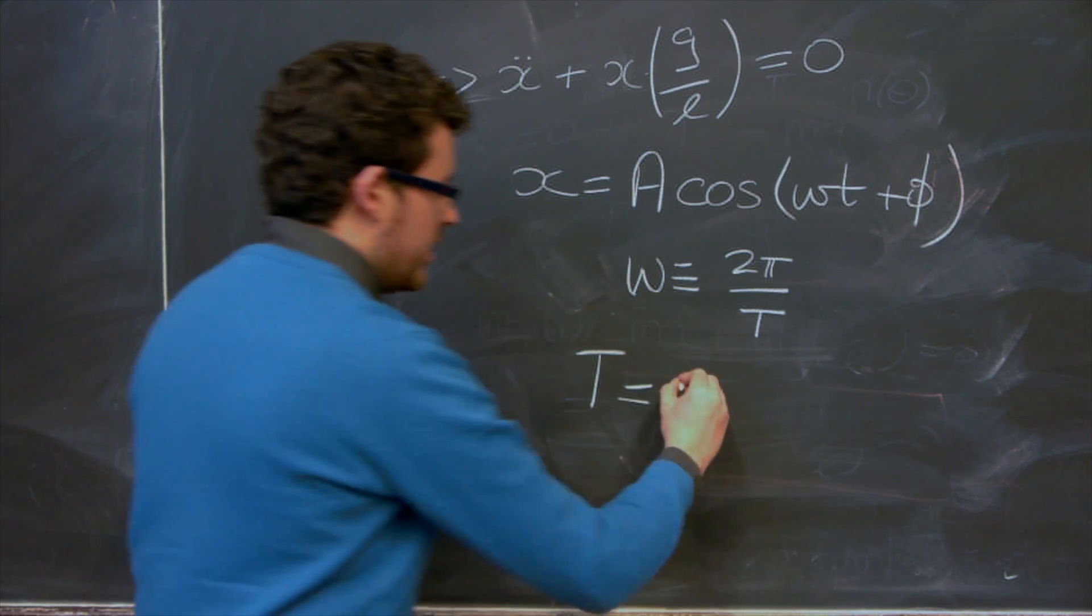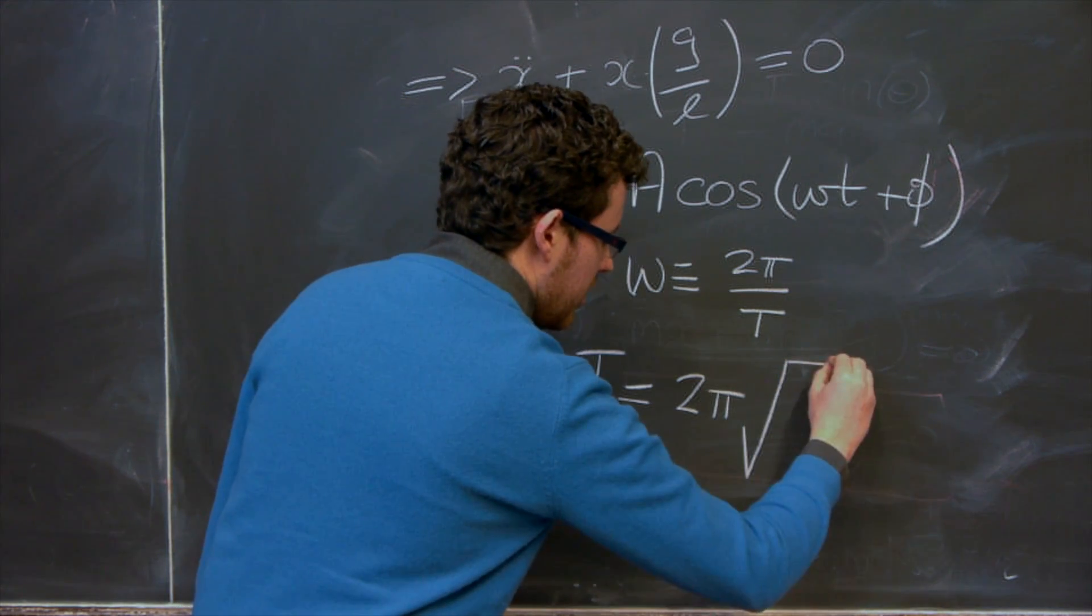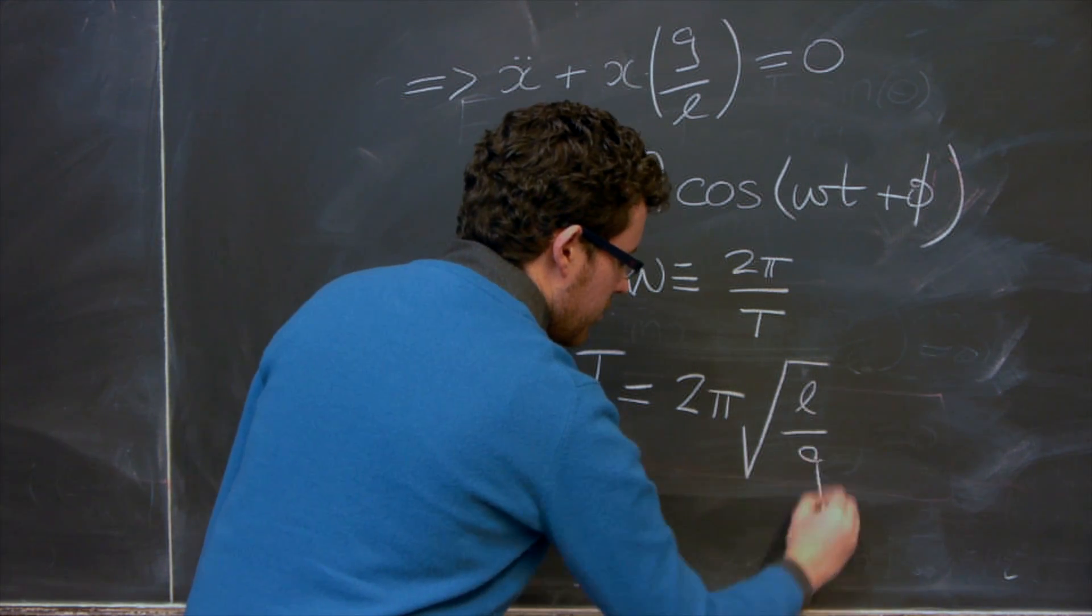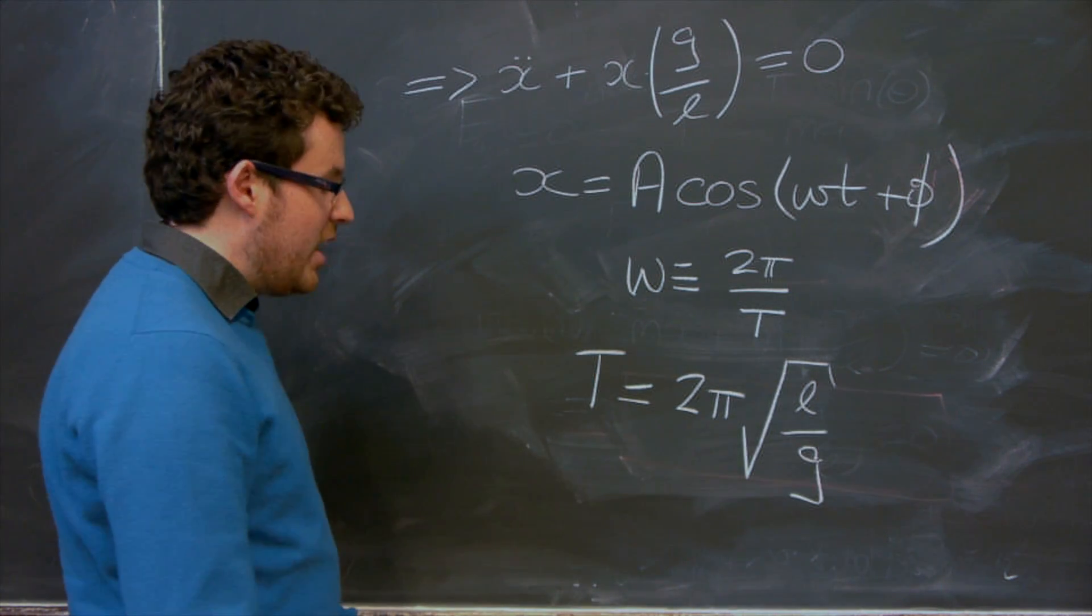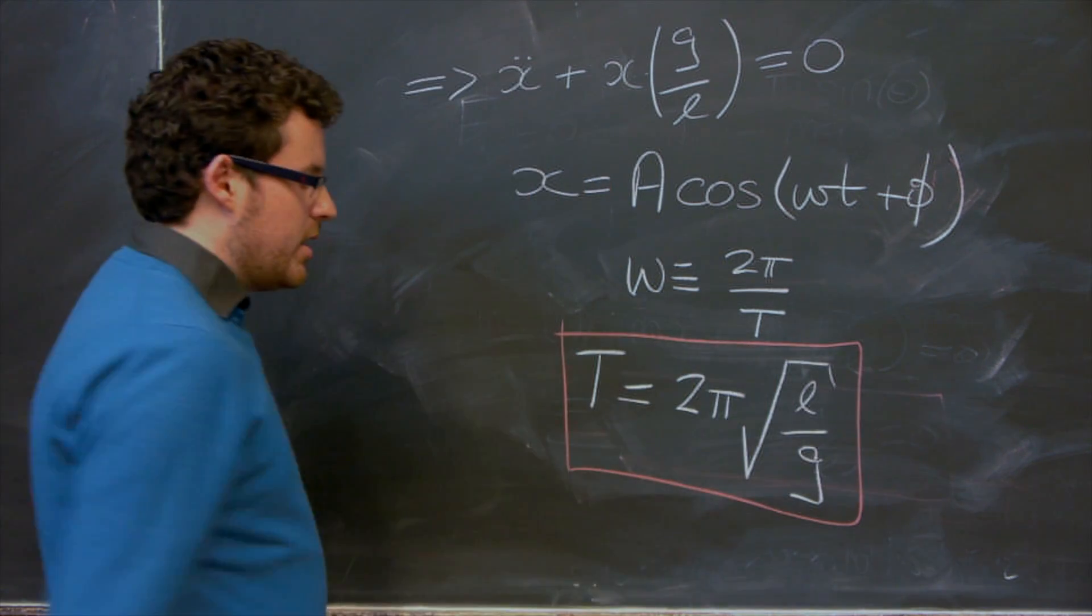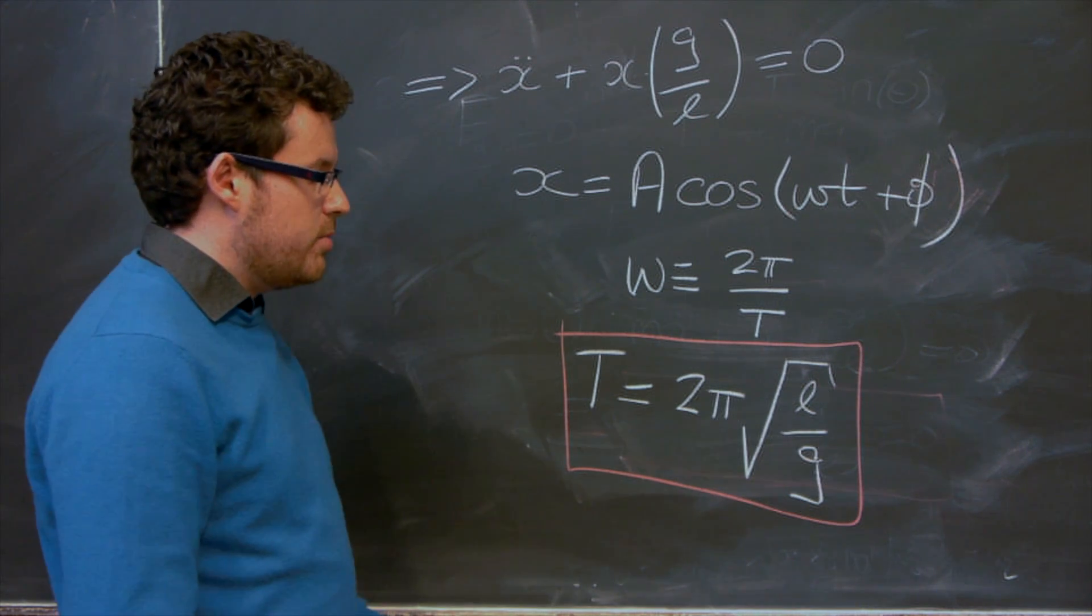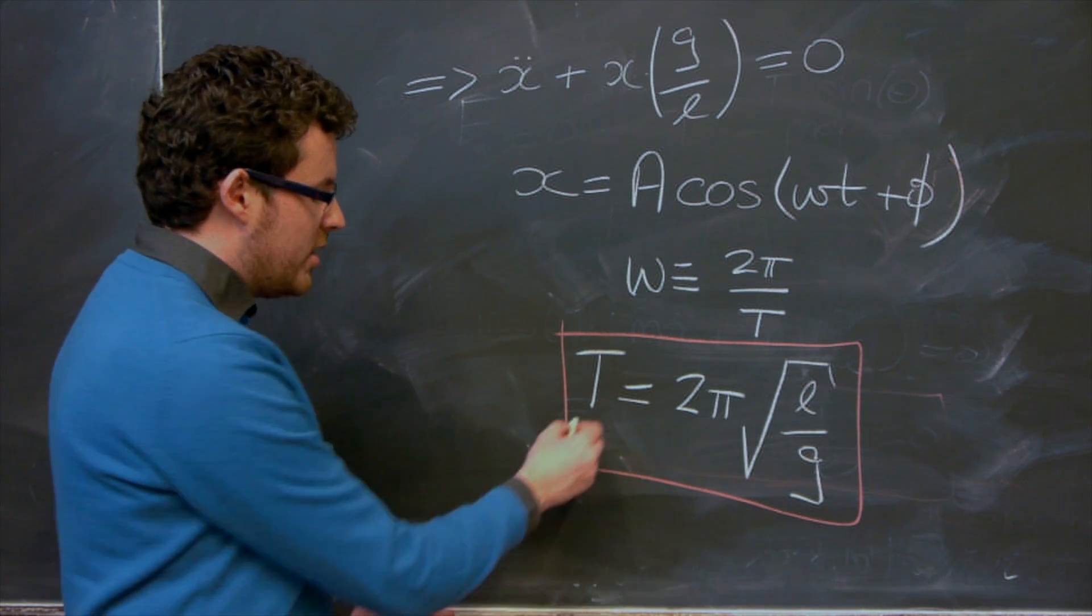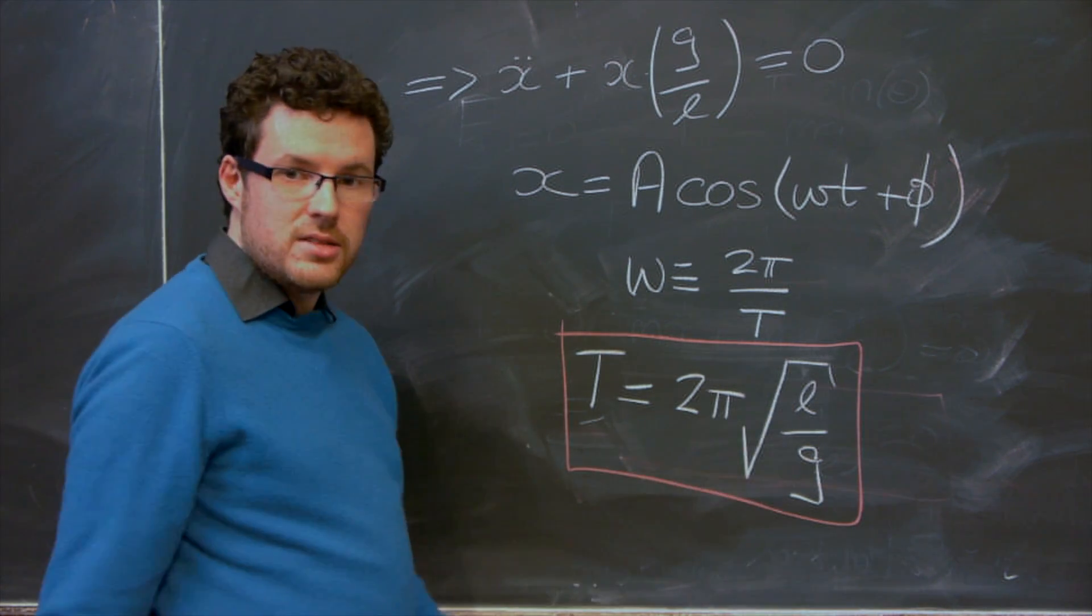And T, the period, is given by 2 pi times the square root of L over G, where G is acceleration due to gravity. So here we have the central equation for this experiment. Because we can measure things and our unknown is contained in here. So what we will do in the experiment is we will measure the period of oscillation for different lengths of string.